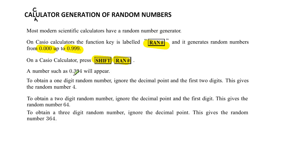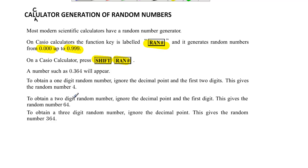Let's say a number like 0.364 appears. How do we use this as a random number? Well, if you want a one digit random number, just ignore the first digit and the second digit and take the last digit. If you want a two digit number, you ignore the first digit and just take the last two. And if you want a three digit number, you take all the numbers to get the random numbers.